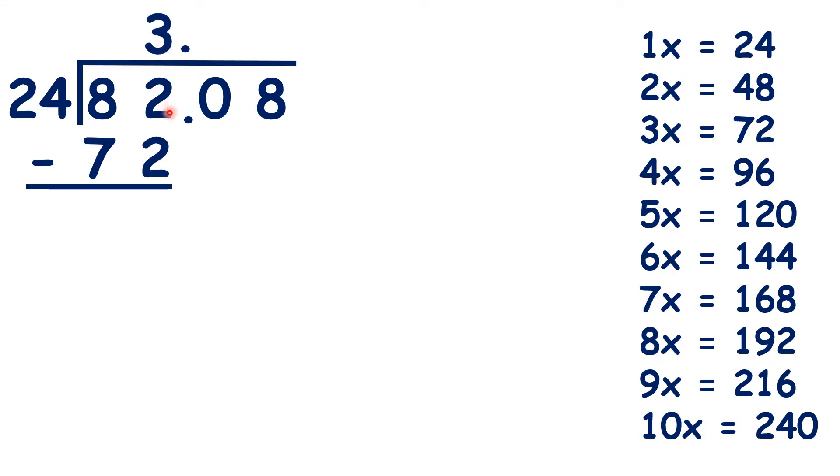Now 82 minus 72 is 10, and we can bring down the 0 so that we have 100 divided by 24. Now, because 4 times 24 is 96, we can write 96 under the 100 and 4 in our answer.